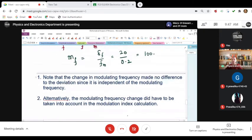So what is it that you are observing? The change in modulating frequency made no difference in the deviation since it is independent of the modulating frequency. Alternatively, the modulating frequency change did have to be taken into account in the modulation index calculation.